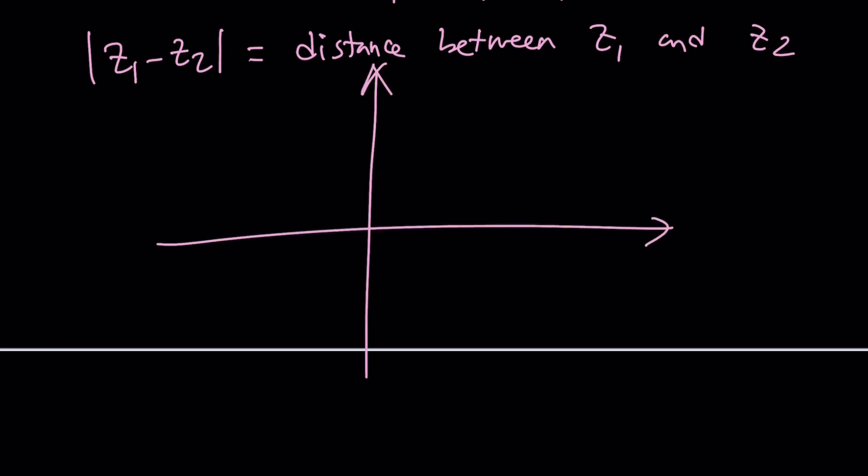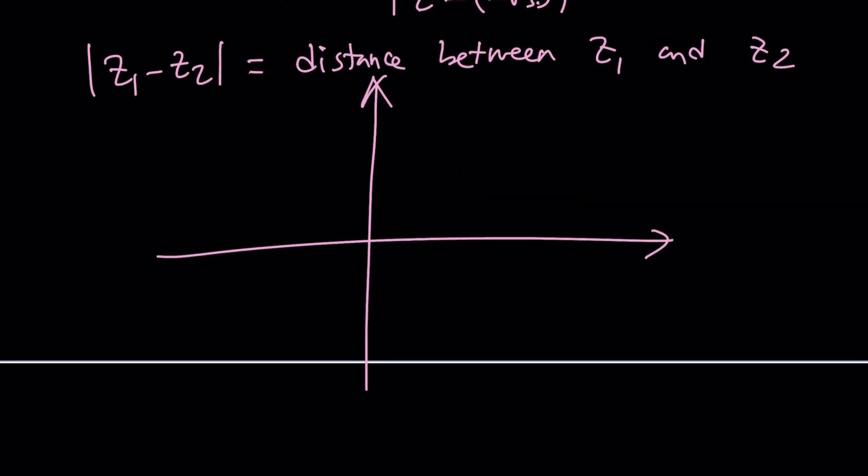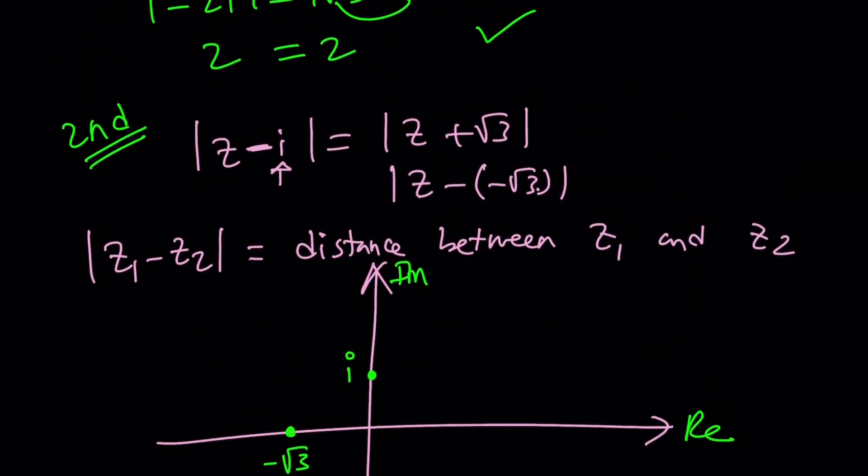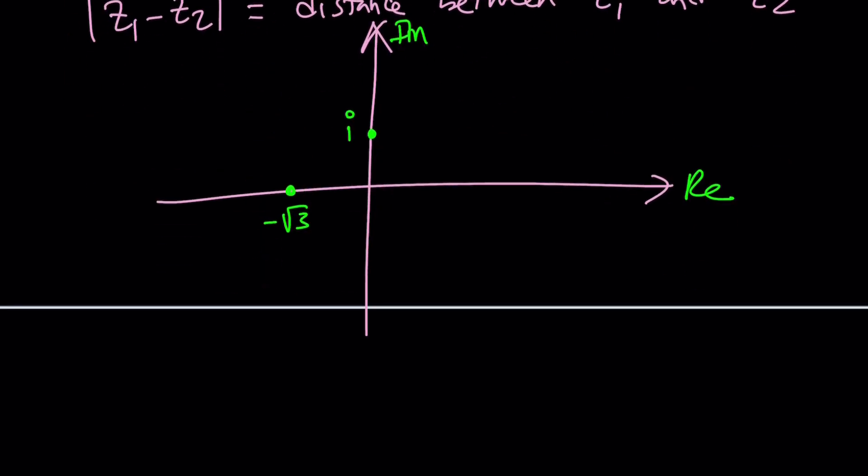Let's try to interpret what this means. I'm going to start by plotting these points. First one is i, which is one unit away from zero on the imaginary axis. This is real. That is i. Then the other one is negative root 3, which is a real number, so it's going to be like negative 1.7-ish. Now here's what I want. I want my number z to be the same distance from these two points. The distance between z and i is the same as the distance between z and negative root 3.